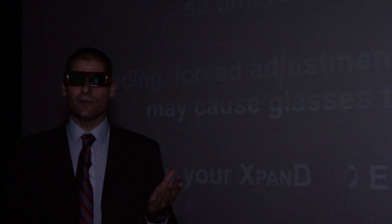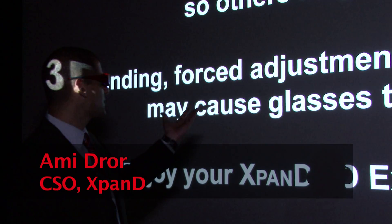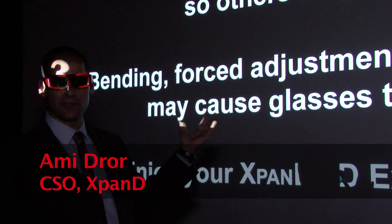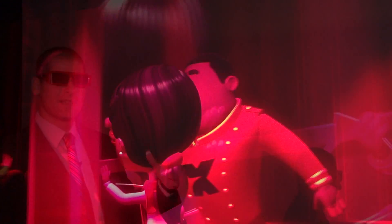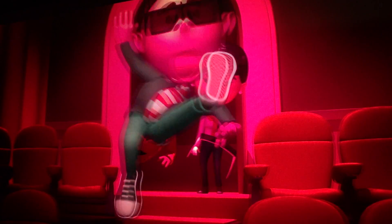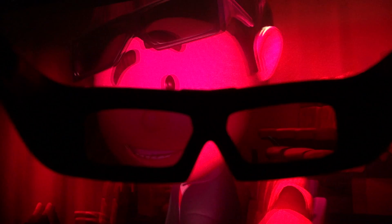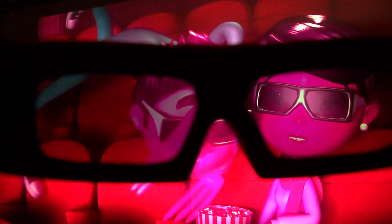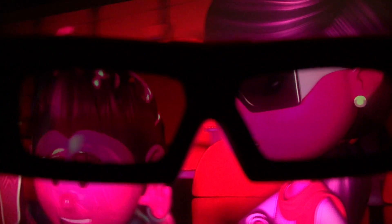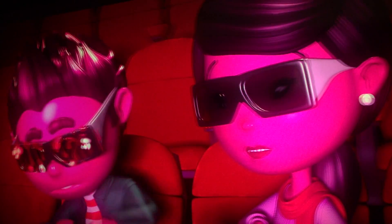The way 3D works with Xpand is, as you can see, there are pretty much two images on the screen—one for the left eye and one for the right eye. So our active shutter glasses are actually a very sophisticated electronic device that shuts one eye when one eye is open and shuts the other eye when the other eye is closed.